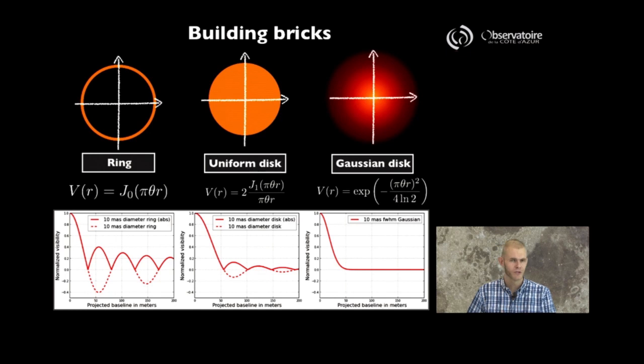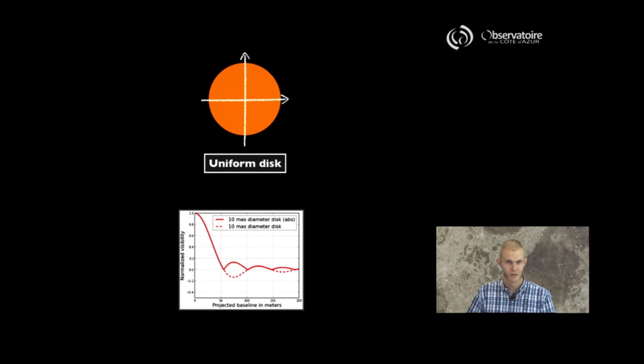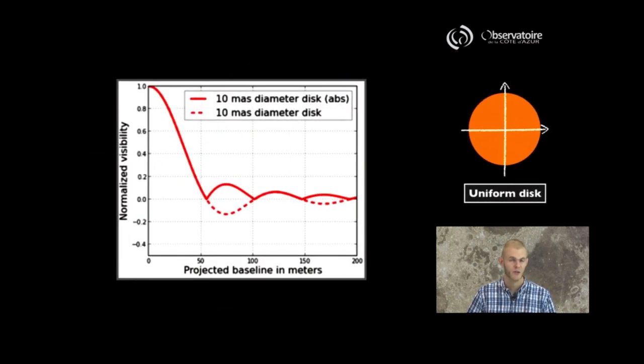I will just pick the uniform disc among those three and discuss some of its specificities. The uniform disc, after all, is one of the most commonly used models, one of the first types of model fitting that we're going to process when looking at actual observations.